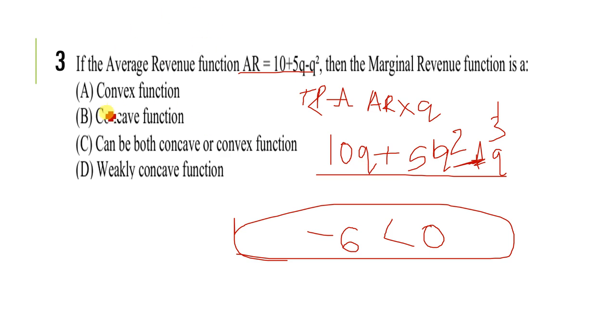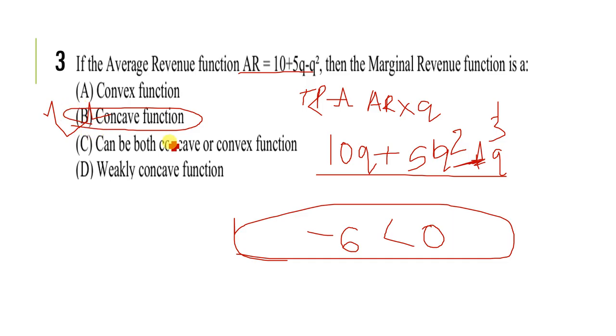The second derivative of MR is less than zero, so we can say that the given MR function is concave. So B is the correct option.